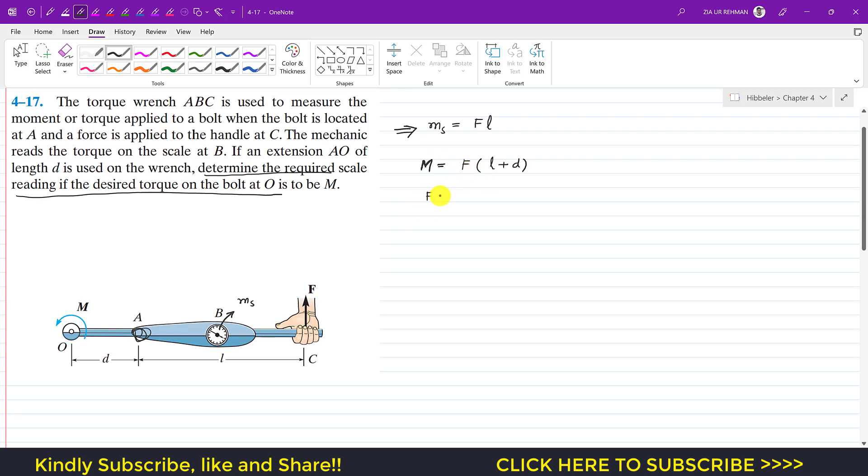Now from this I can write that F is equal to M divided by L plus D. And the scale reading will be F. Now F in terms of M is F into L, and in place of F we can write M. So that is M divided by L plus D into L, or we can write this as L divided by L plus D into M. So this will be the scale reading for a moment of M.